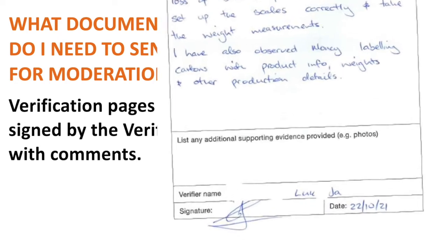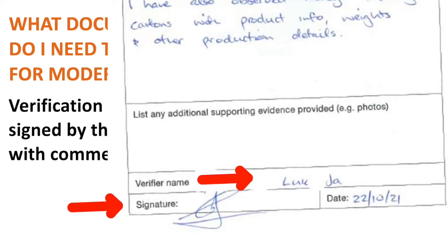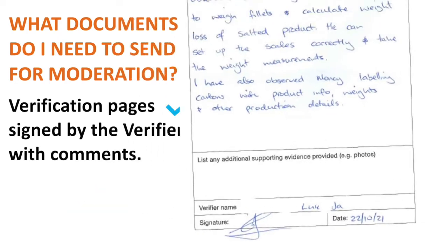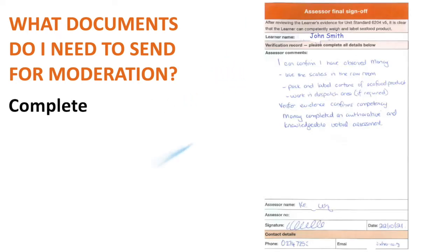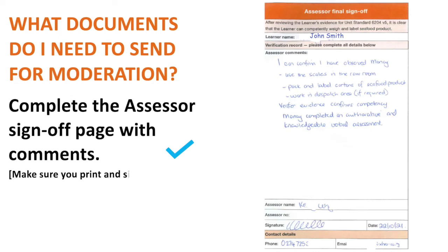Check that verification pages are signed by the verifier with comments. Verifiers need to print their name and sign. They should write comments explaining what they observed and why they know the learner is competent. Written feedback is important for both the learner and for the assessor to decide if the learner has achieved the national standard.